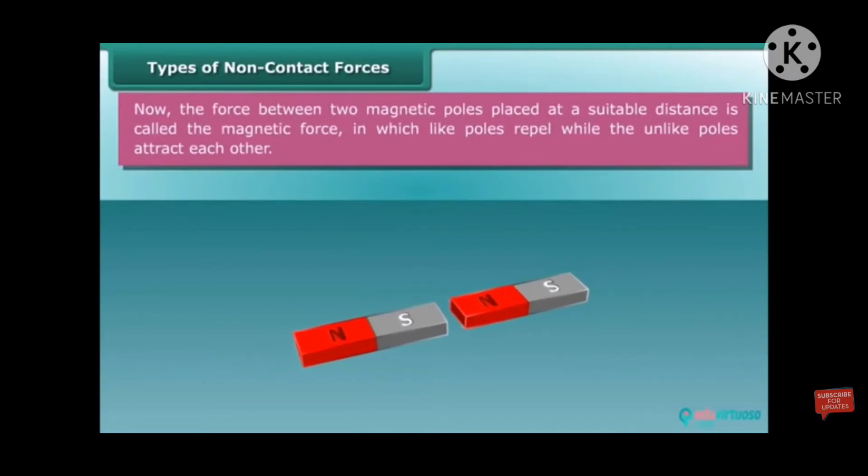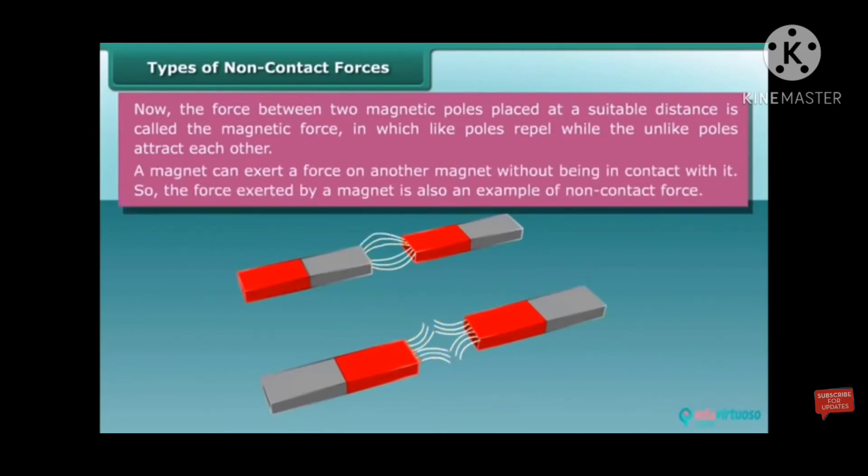Now, the force between two magnetic poles placed at a suitable distance is called magnetic force, in which like poles repel while the unlike poles attract each other. You know that the magnet has two poles, north and south, whereas north-south attract each other, south-south or north-north repel each other.